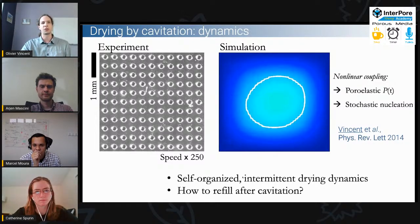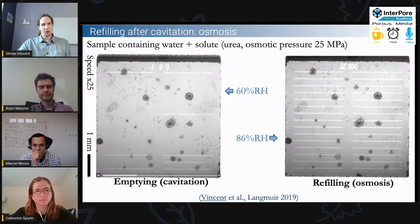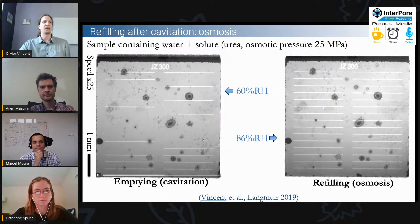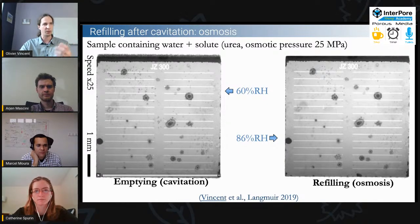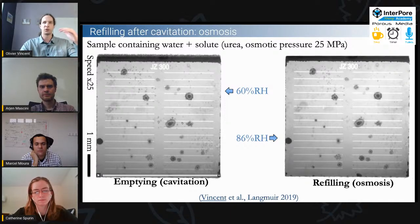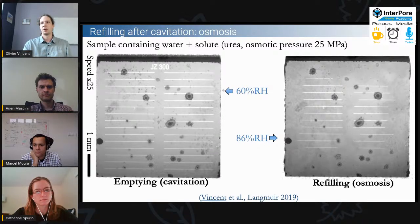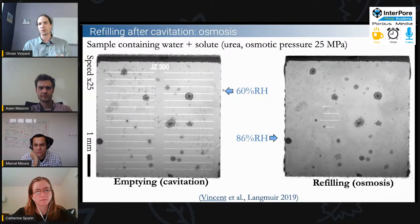The solution to refilling after cavitation comes from solutes. If we use a solution — solutes in the water — instead of pure water, we can still cavitate the system at lower humidities, for example at 60% relative humidity, where things cavitate completely. But once the system is cavitated, if we have solutes, we can refill it by increasing humidity again. Just changing the humidity from 60 to 86%, the system completely refills until there are no bubbles anymore.